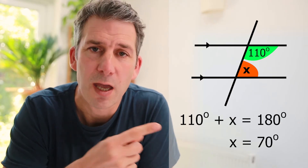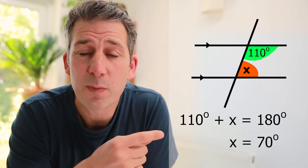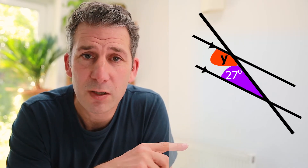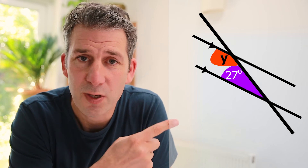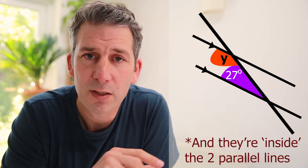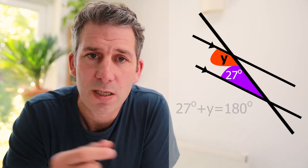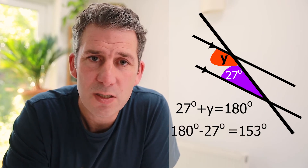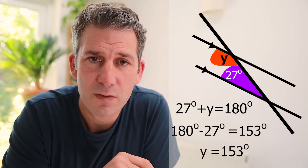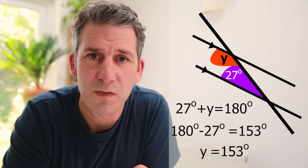So the one we've been given is 110 degrees, so the missing one must be 70 degrees. In this second example we've been given a 27 degree angle and we're finding the missing one — again it's not a corresponding or alternate angle, it must be an allied angle, adding to 180 degrees. So 180 minus 27 gives us 153 degrees — that's the missing angle.